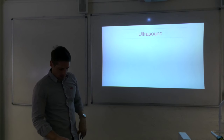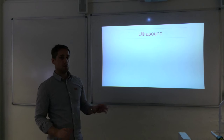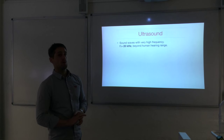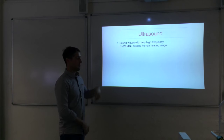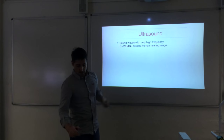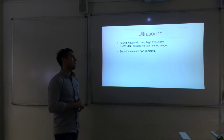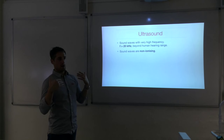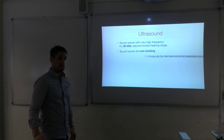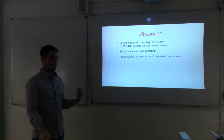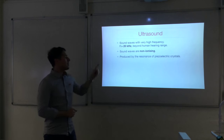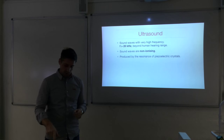Now we look at ultrasound imaging, which does not use x-rays or gamma rays. Ultrasound consists of sound waves with a frequency beyond the range of human hearing — humans can hear up to about 20 kHz, and ultrasound has frequencies higher than that. Sound waves are non-ionising, which is a good feature compared to x-rays and gamma rays. Ultrasound is produced by the resonance of piezoelectric crystals.